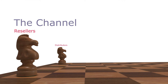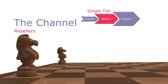In a single-tier model, vendors work with resellers, which buy their products and solutions and sell them onto the end customer. This helps the vendors to expand their sales and services reach into the market, without having to employ vast numbers of sales and support staff. This also works for the reseller, which gets a discounted price, meaning it can make a margin when it sells to the customer.